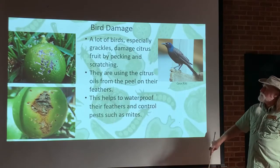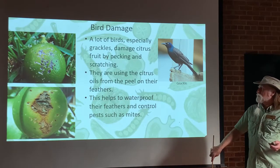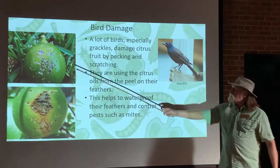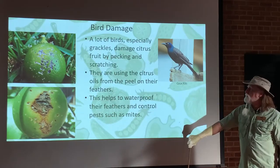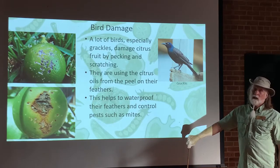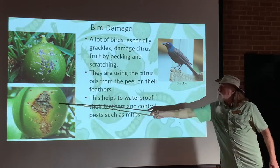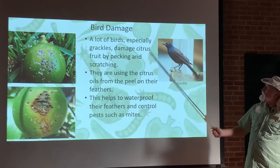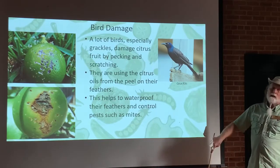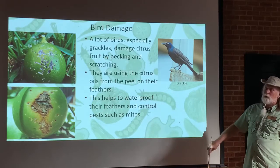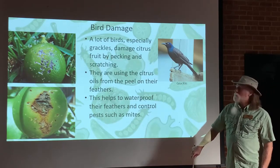Now bird damage — this is one which is very common and it's seen on a lot of different fruit. If you have fruit and this shows up on you, most people are quick to conclude that they have a real bad disease problem. Well, a lot of times what you've got is bird damage, especially the grackles. This is a grackle — it's actually kind of a cute bird, except that so many people have had bad encounters with it. There are many people who would not call a grackle their favorite bird.